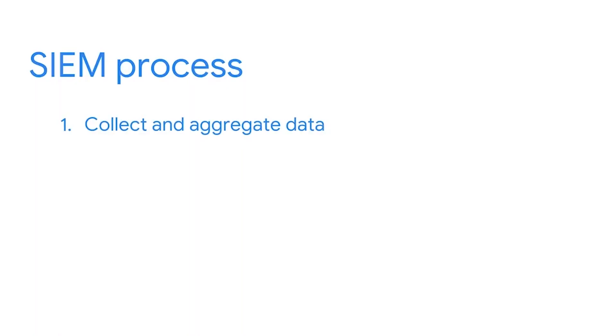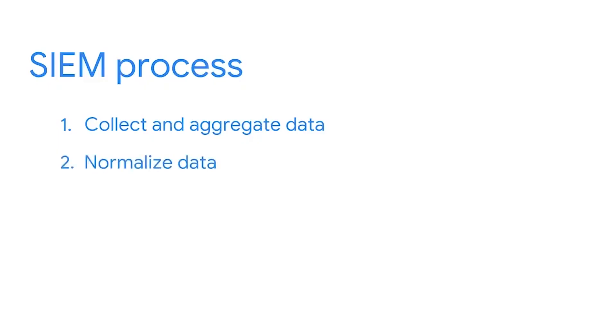Here's what the SIEM process looks like. First, SIEM tools collect and aggregate data, typically in the form of logs — a record of all the events that happen on a given source. Data can come from multiple sources such as IDS or IPS, databases, firewalls, applications, and more. After all this data gets collected, it gets aggregated — centralized in one place. Next, SIEM tools normalize data by removing non-essential attributes so that only what's relevant is included, creating consistency in log records, which is helpful during incident investigation.